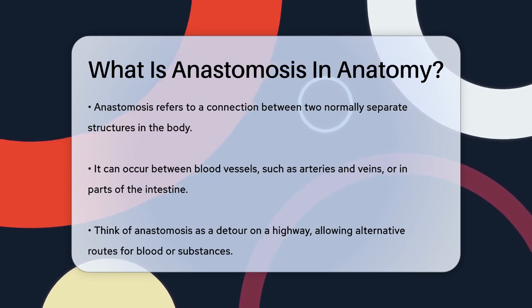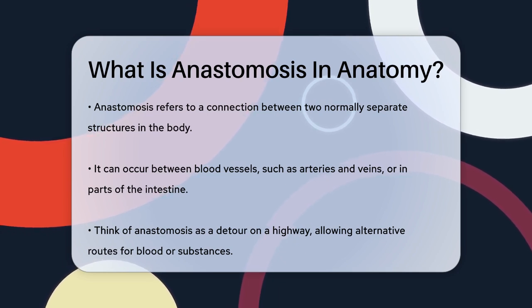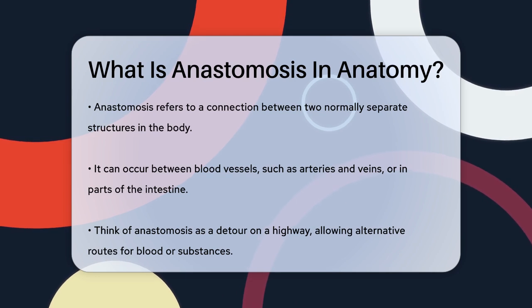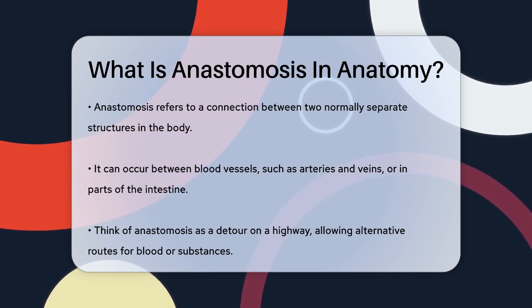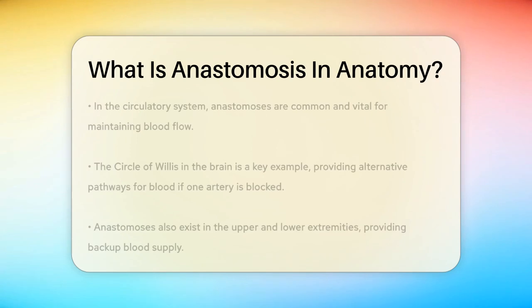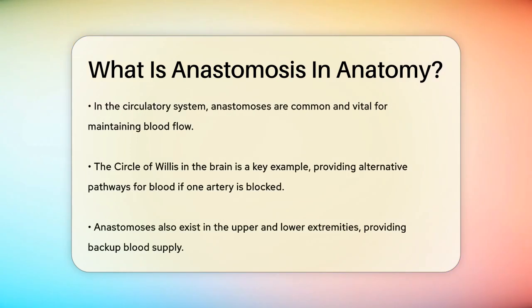Imagine it like a detour on a highway. If one road is blocked, the anastomosis provides an alternative route for blood or other substances to flow through. In the circulatory system, anastomoses are quite common.